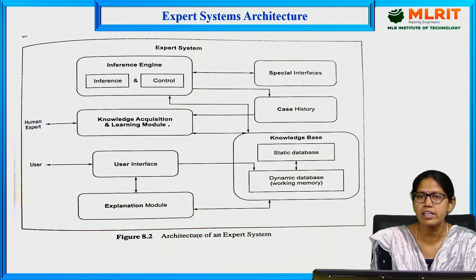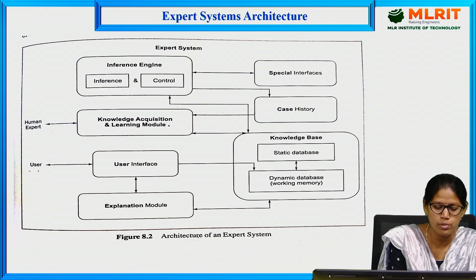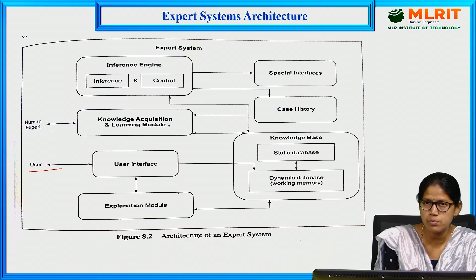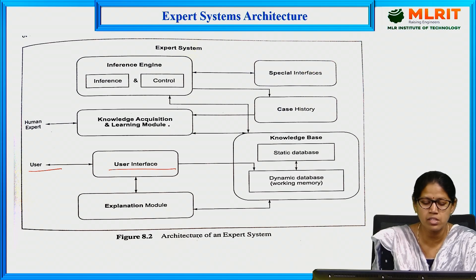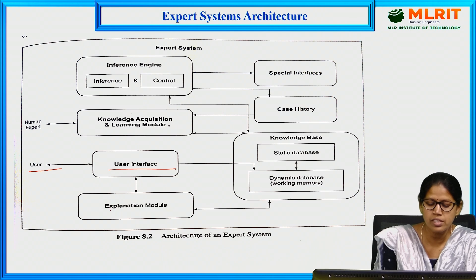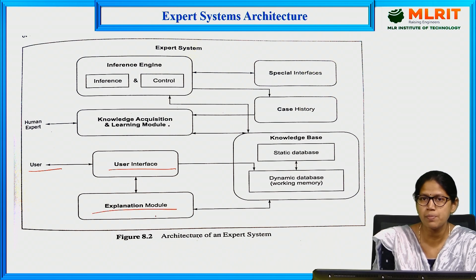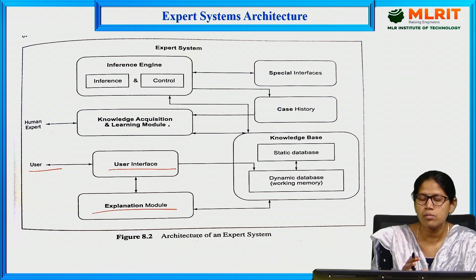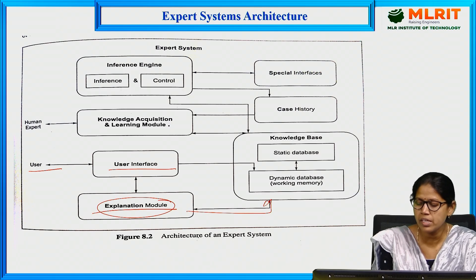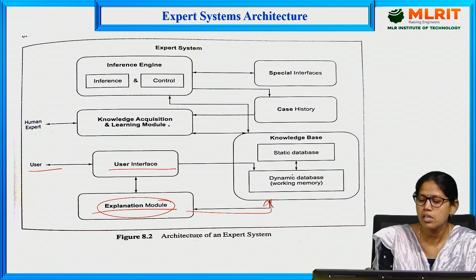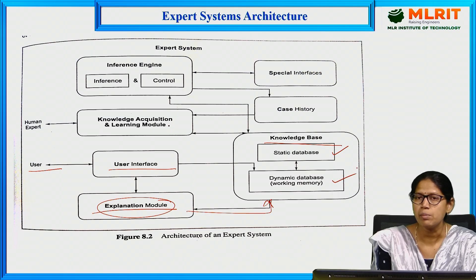Let us see the architecture of the expert system. The user will interact with the expert system using a user interface that can be natural language, any other interaction module, or menus. The user interface is connected with the explanation module, which explains how the problem is being solved. It is also connected with the knowledge base, which contains two types: static database and dynamic database.